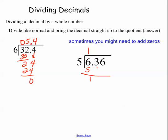Let's go to the next one. 5 goes into 6 one time. There's 1 left over. Bring down my next number. 5 goes into 13 two times. That's 10. Bring down the next number. 5 goes into 36 seven times. That's 35.